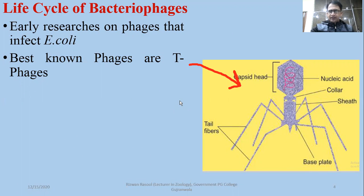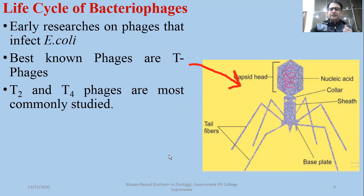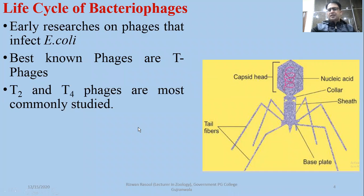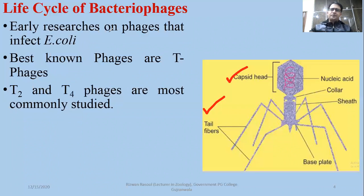T-phages appear tadpole-like. In T-phages, T-even numbers like T-2, T-4, T-6, and T-8 types have been discovered, but even phages especially T-4 and T-2 are the most commonly studied. The structure shown is a type T-4 phage, and its structure and life cycle components were discussed in the previous lecture.